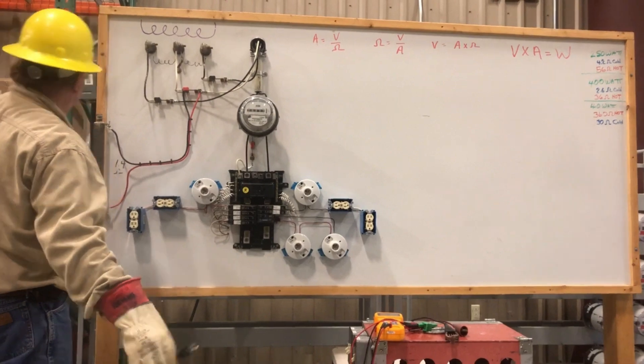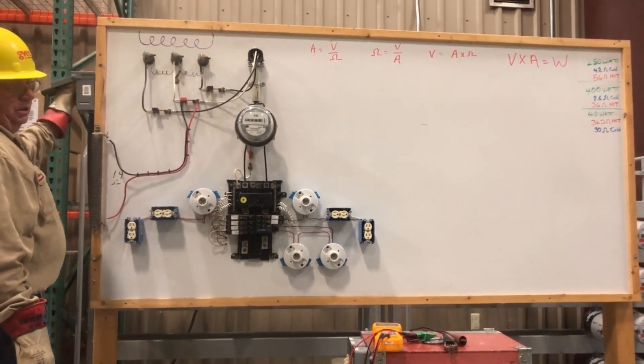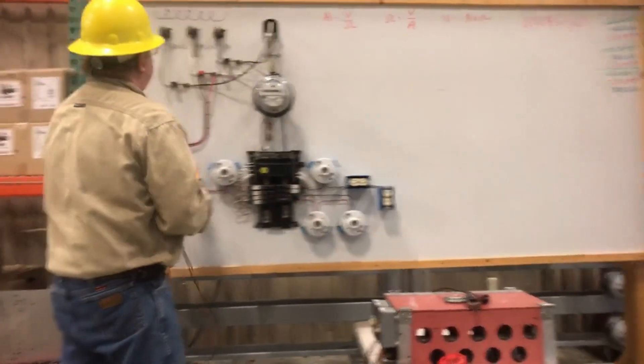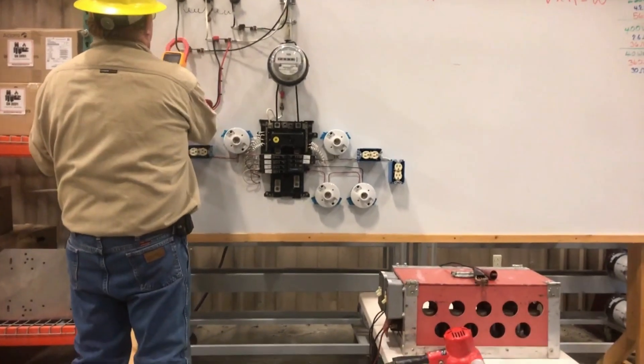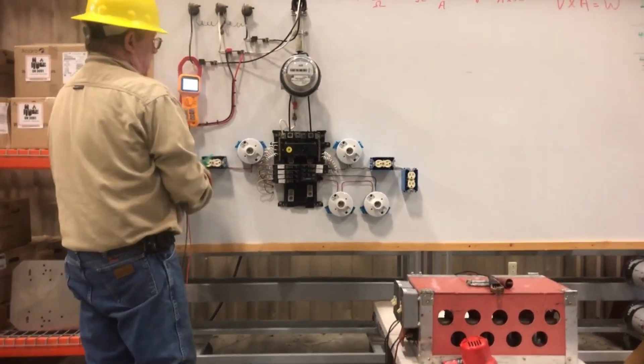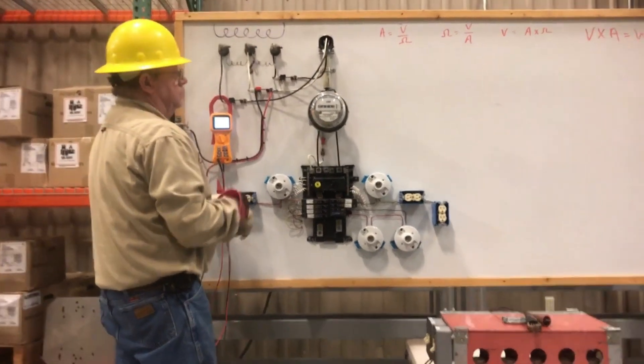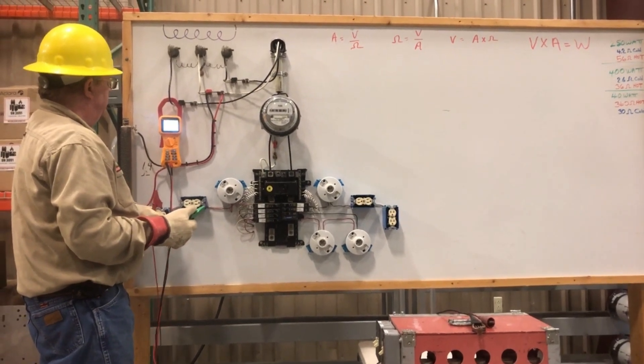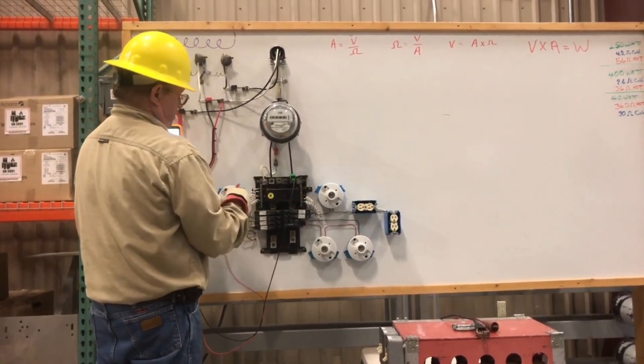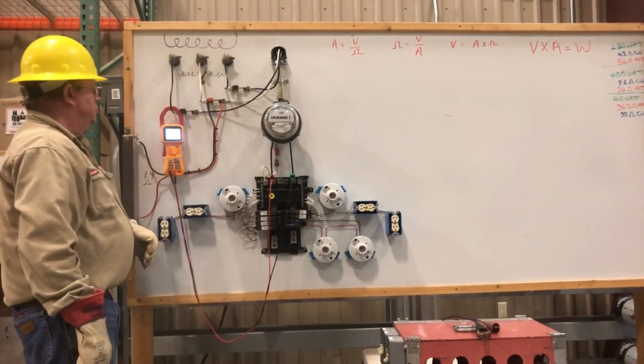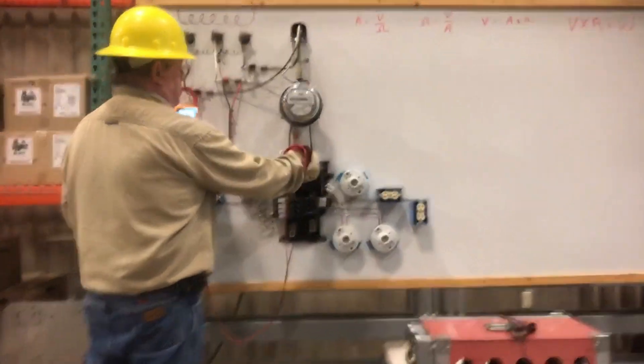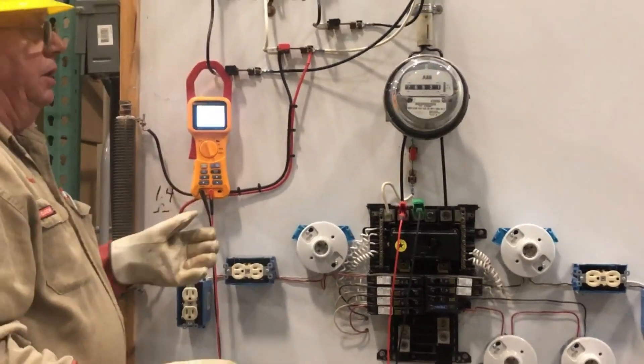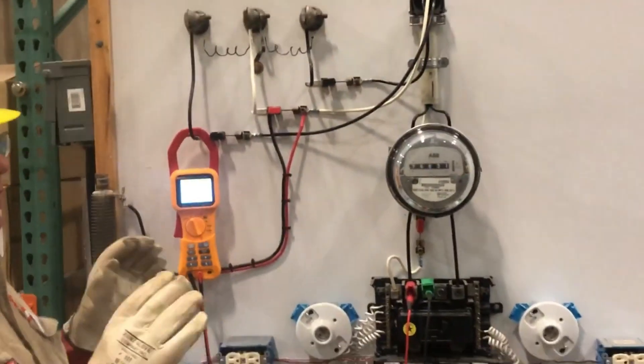So if we went up here today and measured voltage, we have a complaint. The complaint is my lights go dim and they go bright. We shut it off. We measure voltage with the meter in, but there's no load. And we'll measure 241.8, 120.9. And no one could argue. They would say our voltage is good, everybody's happy.